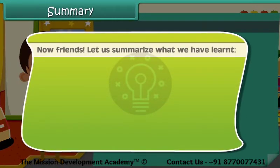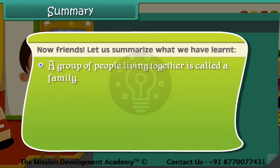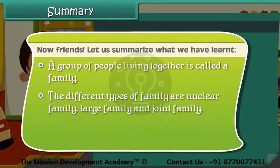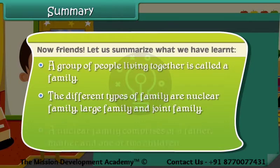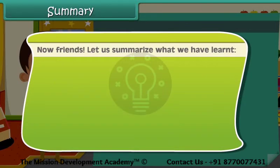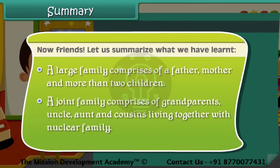Now friends, let us summarize what we have learned. A group of people living together is called a family. The different types of family are: nuclear family, large family and joint family. A nuclear family comprises of a father, mother and one or two children. A joint family comprises of grandparents, uncle, aunt and cousins living together with the nuclear family.